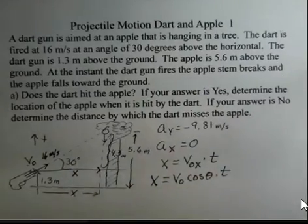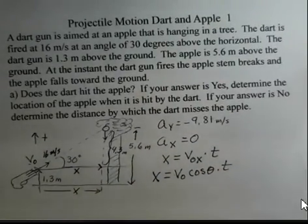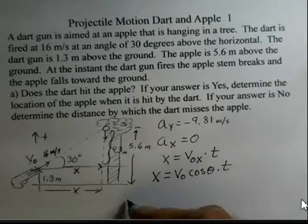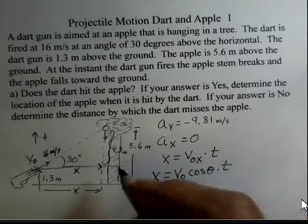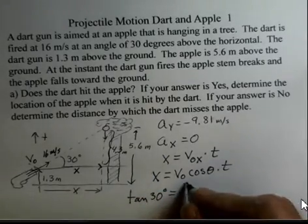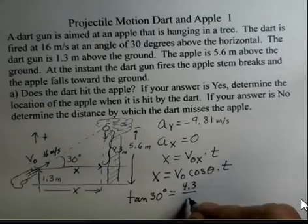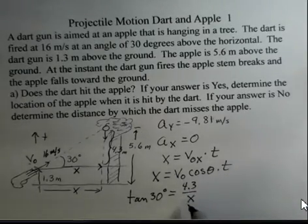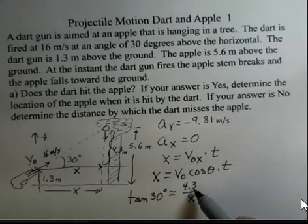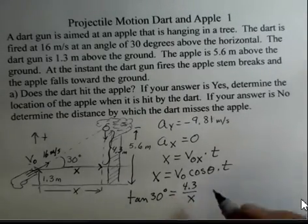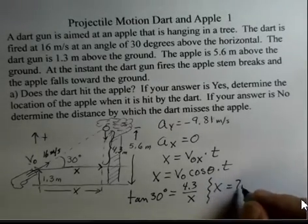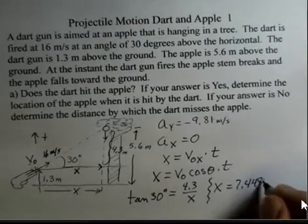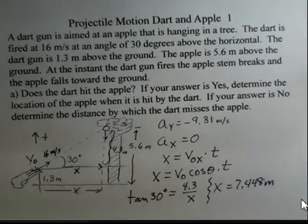That gives us enough information to calculate X. So tangent of 30 degrees equals opposite over adjacent, 4.3 over X. Multiply both sides by X and divide both sides by tangent of 30 degrees. We'll end up taking 4.3 divided by tangent of 30 degrees, and that will inform us that X has a value of 7.448 meters.